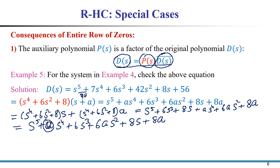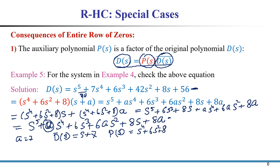By comparing coefficients of this expanded polynomial with the original characteristic polynomial, we see that the coefficient of s⁴ is 7, so we select a = 7. Therefore D-bar(s) = s + 7, and P(s) = s⁴ + 6s² + 8.